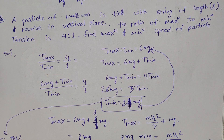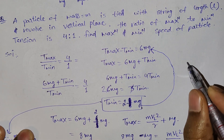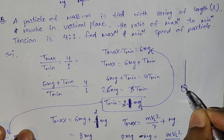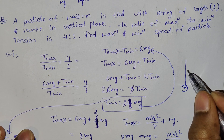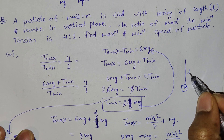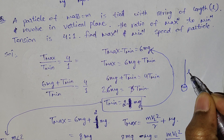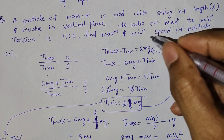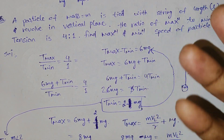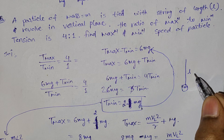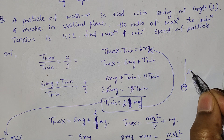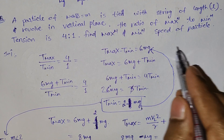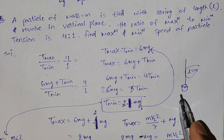Next question: a particle of mass m is tied to a string of length L. In vertical circular motion with a string, the radius of the circle equals the rope length, so we take r = L. The particle is doing vertical circular motion.